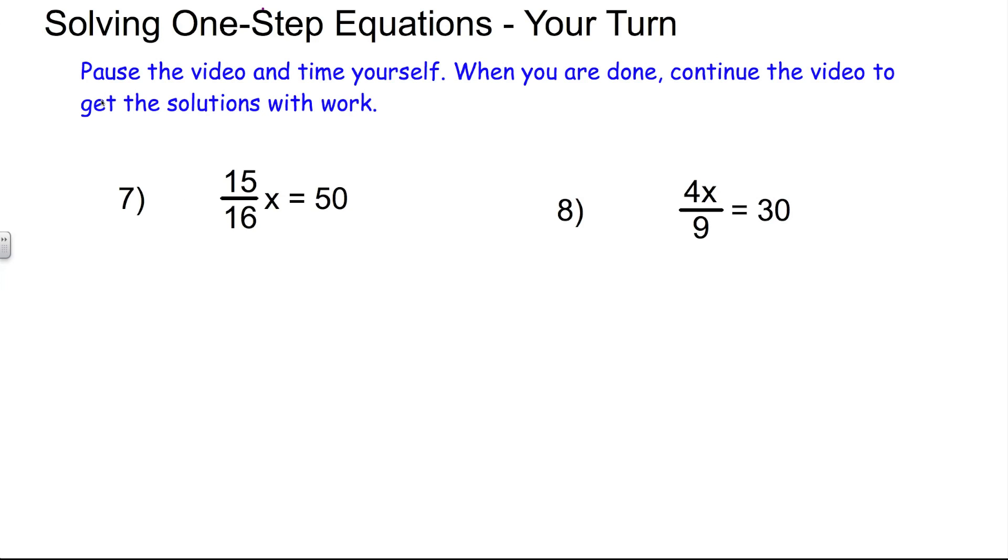Welcome back. Hopefully you got both of these problems right. Let's take a look at these solutions. In number 7, we have 15 over 16 times x is equal to 50. We're going to use the method by multiplying each side by the reciprocal here. We're going to multiply each side by 16 over 15. Remember, on the left-hand side, the 15s and the 16s will divide out, leaving us with 1x. Thus, our goal has been met.